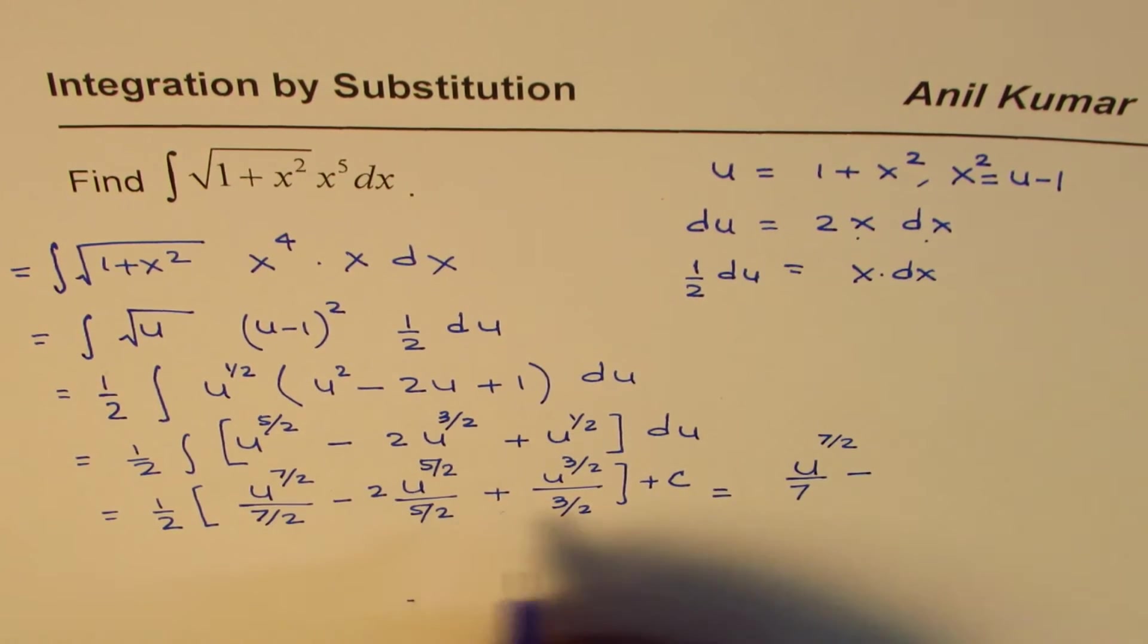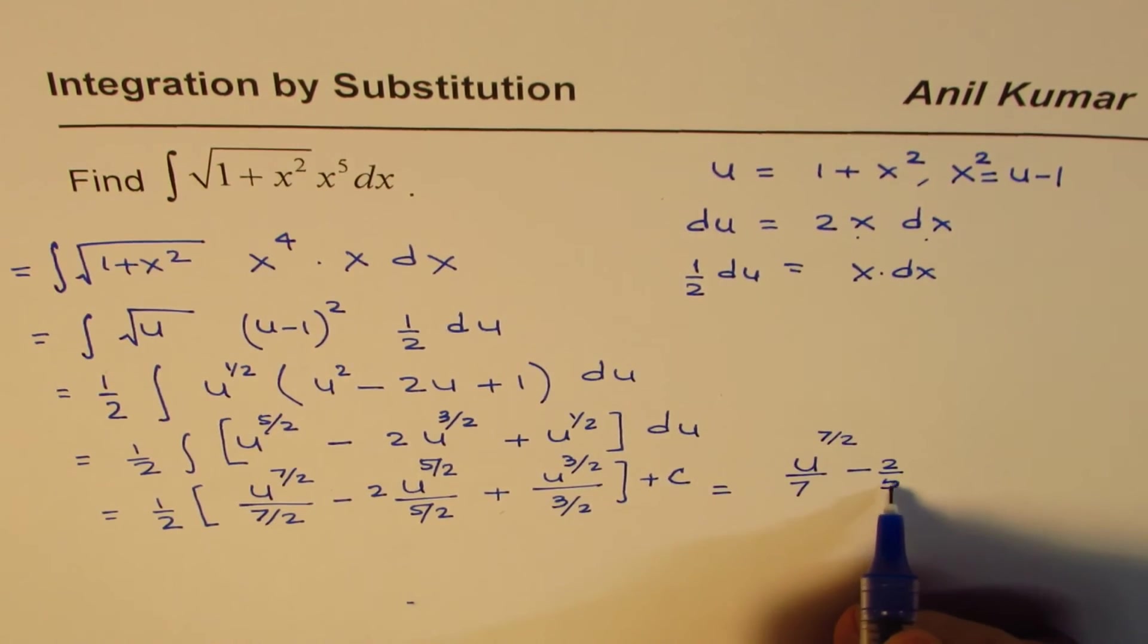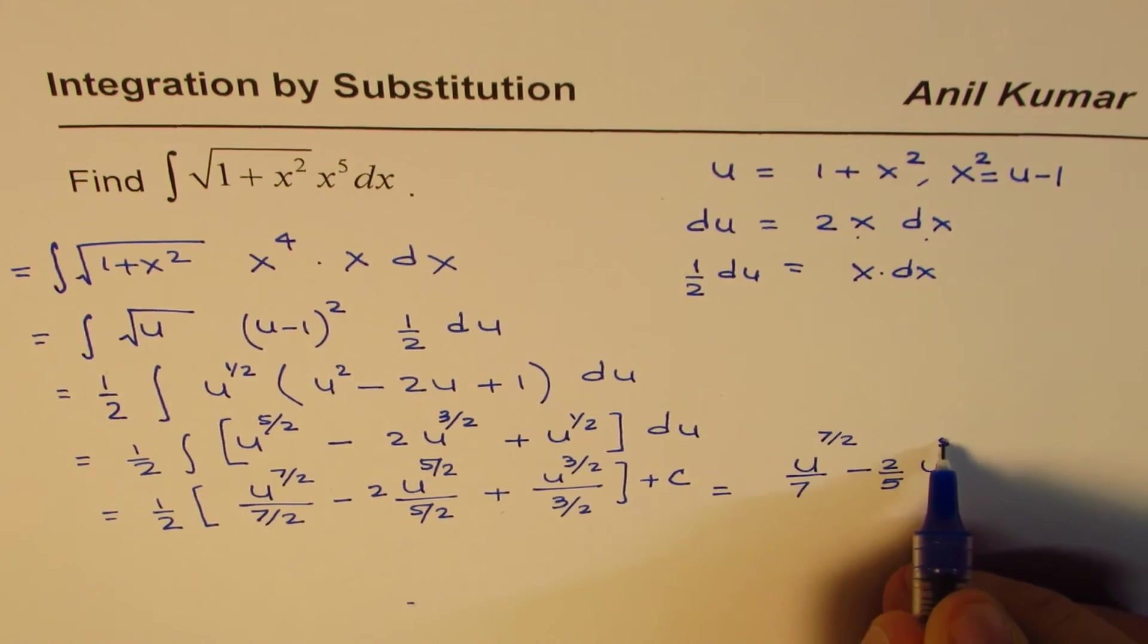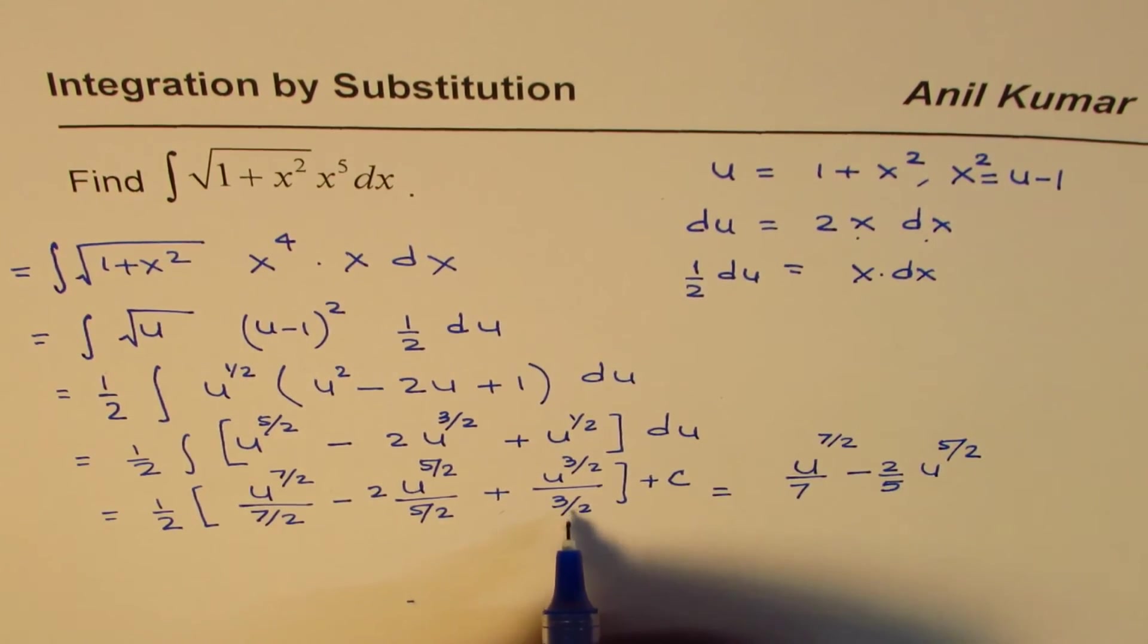Minus, here we'll get 2/5 u to the power of 5/2, and in this case we'll get 1/3 u to the power of 3/2 plus c.